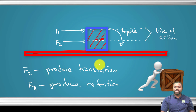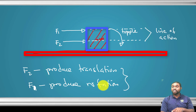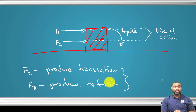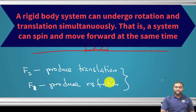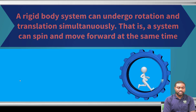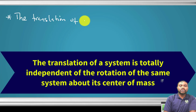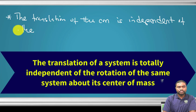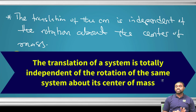It is possible for this box to undergo rotation and translation at the same time, depending on the point of application of the force. Write this down: it is possible for a system to undergo rotation and translation simultaneously. Also write: the translation of the center of mass is independent of the rotation about the center of mass.